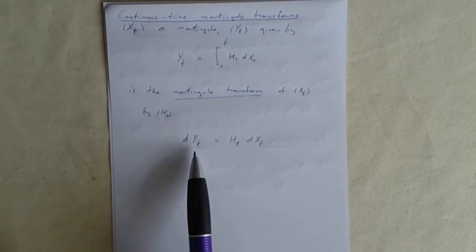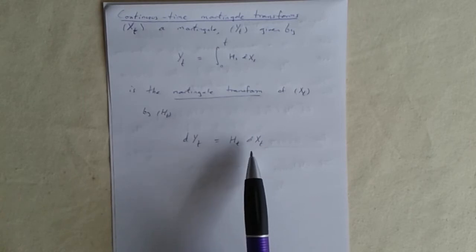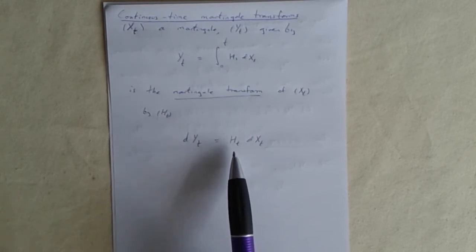That is, the increment of the y process between t and t plus delta t is the same as the corresponding increment of the x process, but multiplied up by some other factor ht, which can vary with t and can also be random.